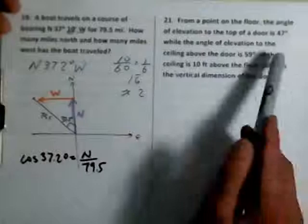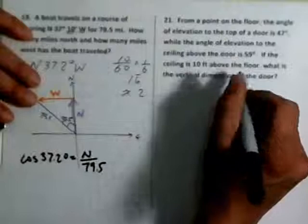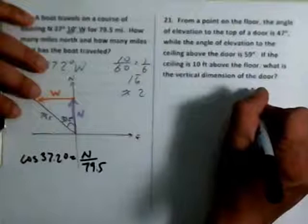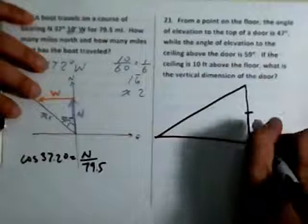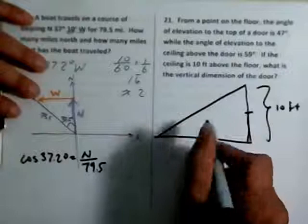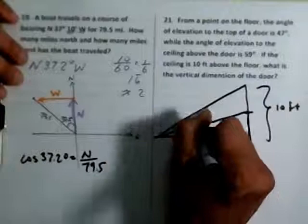From the point on the floor, the angle of elevation to the top of the door is 47 degrees, while the angle of elevation to the ceiling above the door is 59 degrees. They actually give you a picture of that. I'm going to draw this picture out for you. This isn't too hard of a problem. 23 is a harder problem. So I'm going to start you off with this. And then we'll stop here. And then I'll give you a third part. So it looks something like this. The door is right over here. That distance is 10 feet.